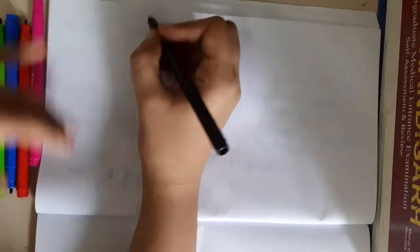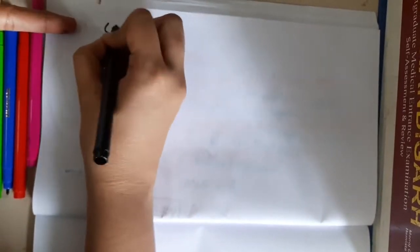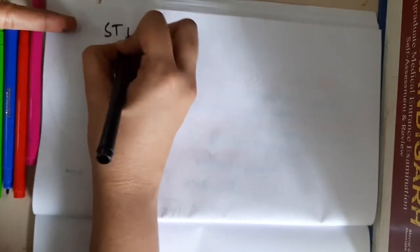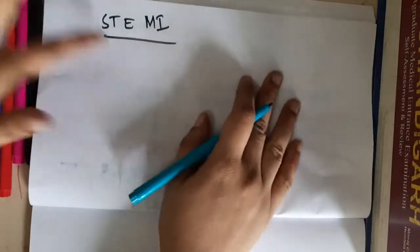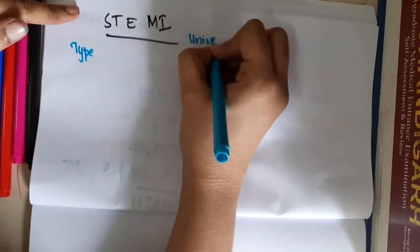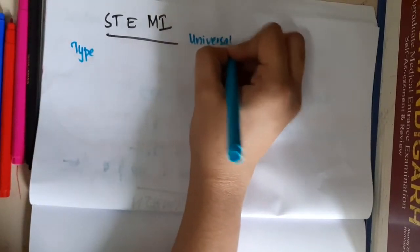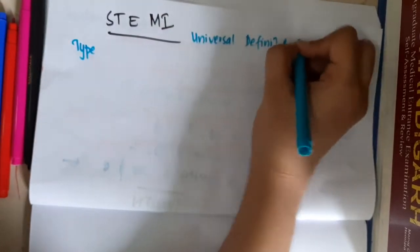Hello friends. Let us now learn about the definition of MI, that is ST segment elevated MI. In ST segment elevated MI, we have the universal definition of ST segment elevated MI. It is of 5 types.